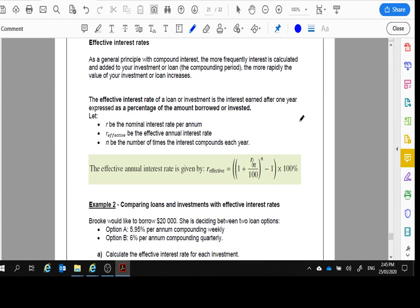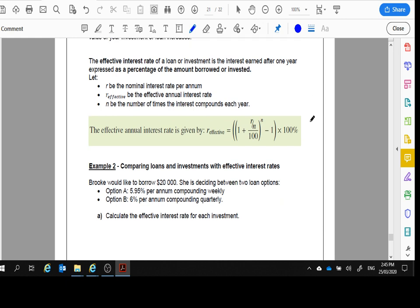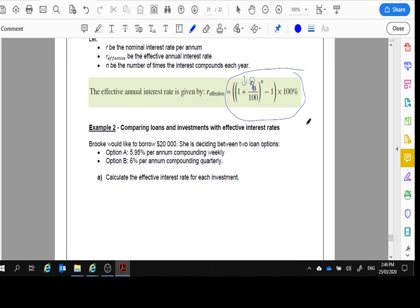Effective interest rate. Now we can work out the effective interest rate using this rule. The formula is 1 plus R (your rate) divided by N (the number of times in a year that interest is being added) divided by 100, all to the power of N, minus 1, then times 100 to get it back to a percentage.